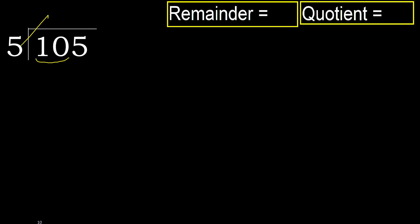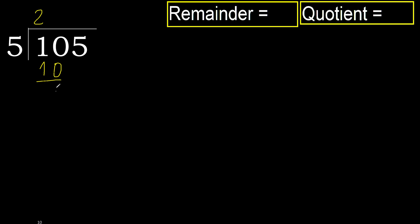5 multiply by 3 is 15. 15 is greater. Multiply by 2 is 10, is not greater. 10 minus 10 is 0. Next.